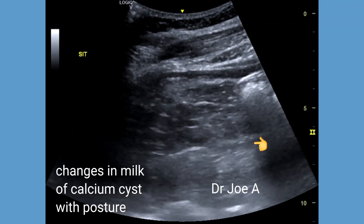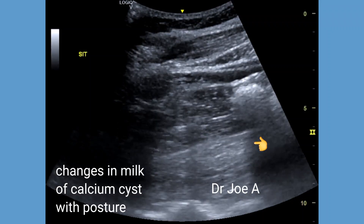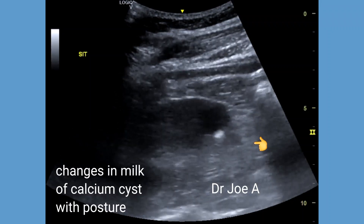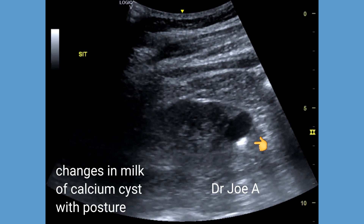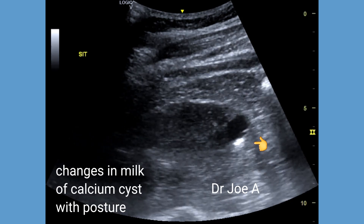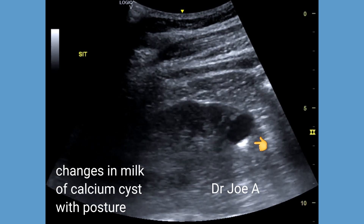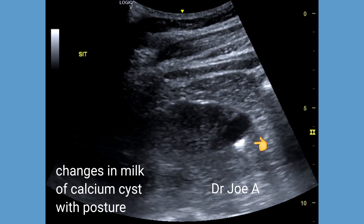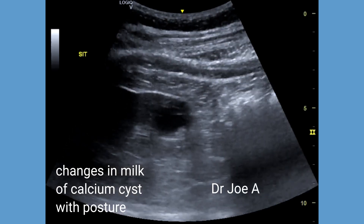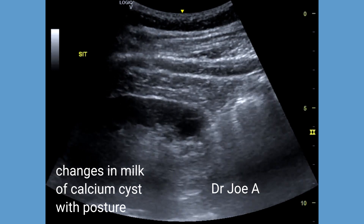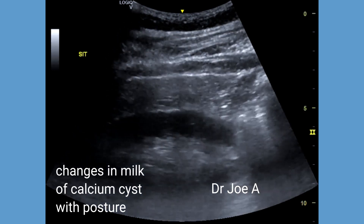This simple cyst of the right kidney contains a colloidal suspension of calcium salts, which is called a milk of calcium cyst.